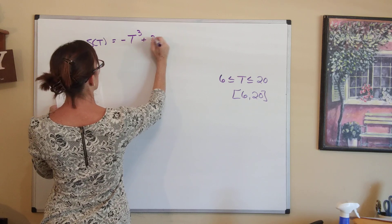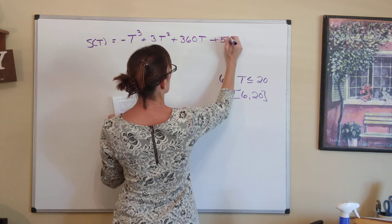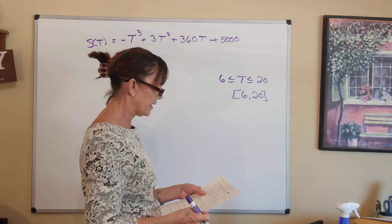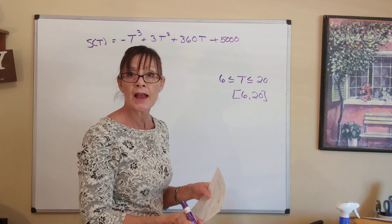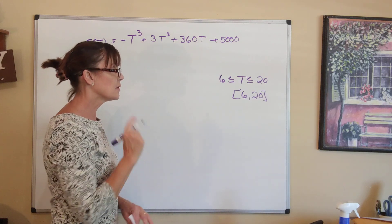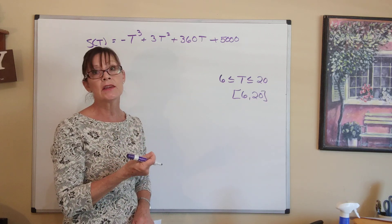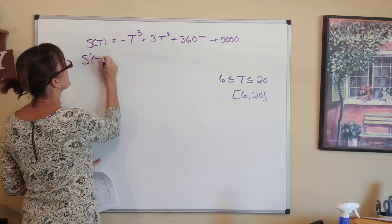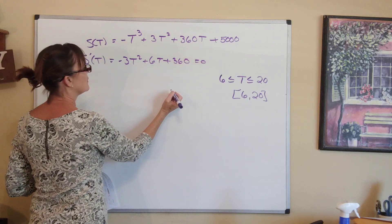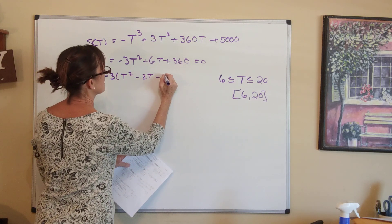The function is S(t) = −t³ + 3t² + 360t + 5000. We apply the extreme value theorem because it's a closed interval and a continuous function. We find critical values by taking the derivative: S′(t) = −3t² + 6t + 360. Setting equal to zero and factoring out −3 gives t² − 2t − 120 = 0.